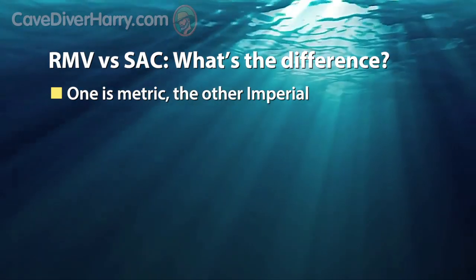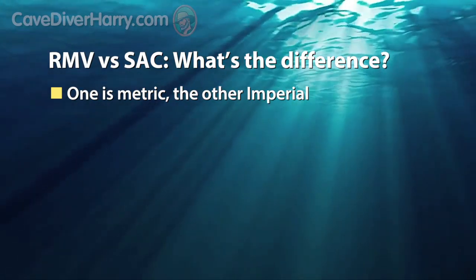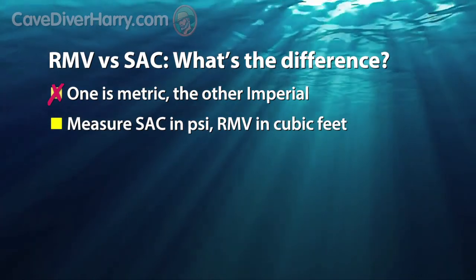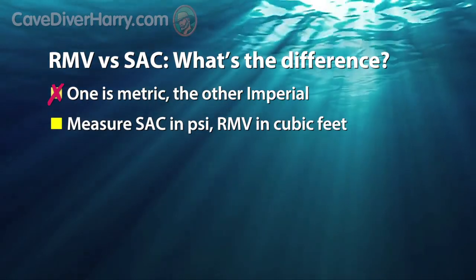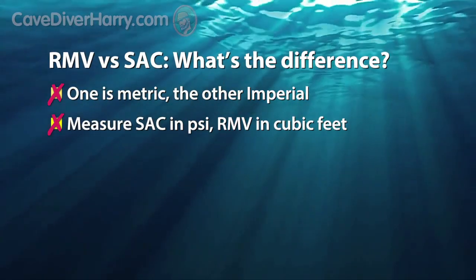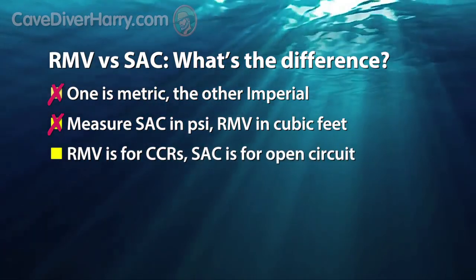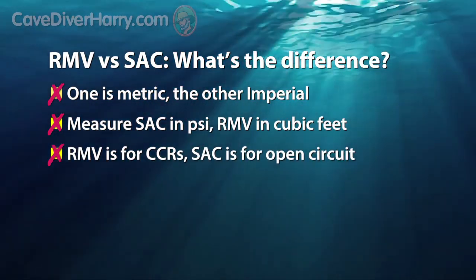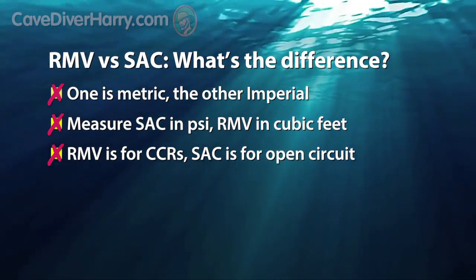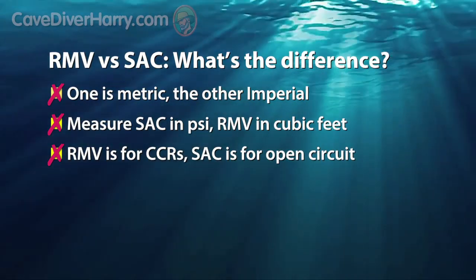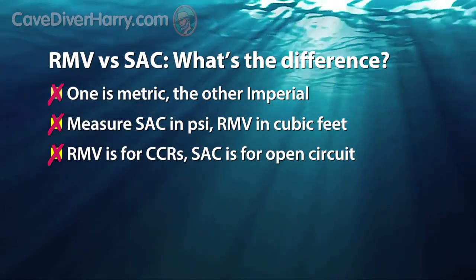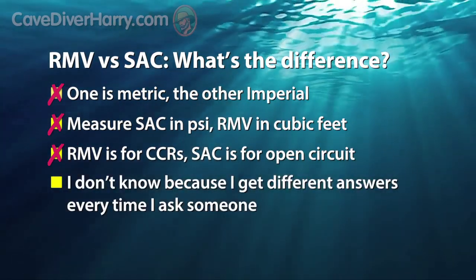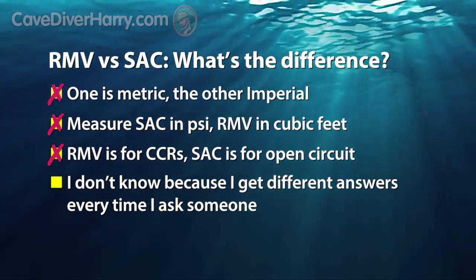Well, one is metric and the other is imperial. You measure SAC in PSI and RMV in cubic feet. RMV is for CCR diving. SAC rate is for open circuit. And then there's my favorite answer because it's the most common and the most honest: I don't know — every time I ask someone to explain it, I hear something different.